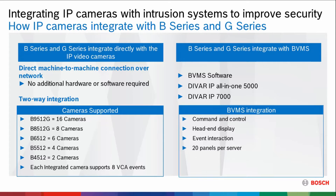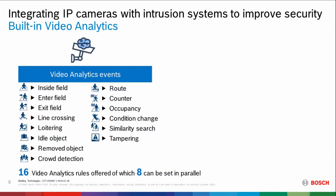It gives us a head-end display so we can see what's going on. We get events and we can see which areas are armed in the alarm panel. Event interaction means that if something happens, we can bring up video associated with that event — someone disarms, show me the camera by that door. With the server-based software, we can actually support up to 20 panels per server at the same time. Most of our conversation today, though, is going to be about the IP direct connection.